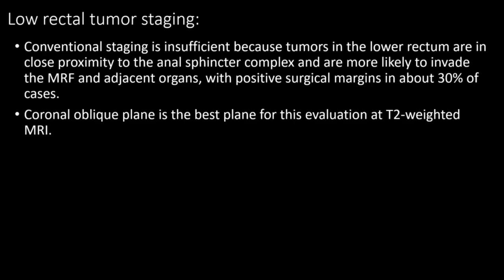For low rectal tumor staging, conventional staging is insufficient because tumors in the low rectum are in close proximity to the anal sphincter complex and are more likely to invade the mesorectal fascia and adjacent organs, with positive surgical margins in about 30% of cases. The oblique coronal plane on T2-weighted MRI is the best image for this evaluation.